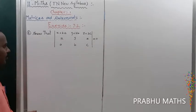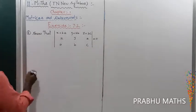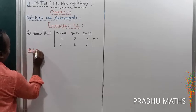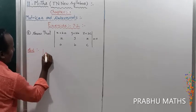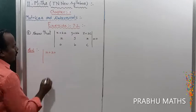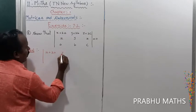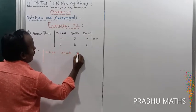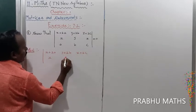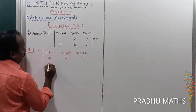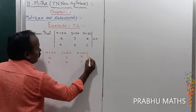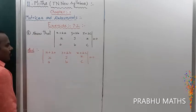So first of all, the given determinant values are: X plus 2A, Y plus 2B, Z plus 2C, then X, Y, Z, then A, B, C — which is equal to 0.